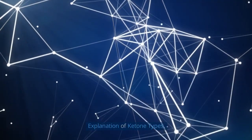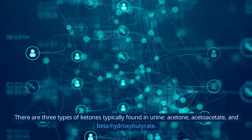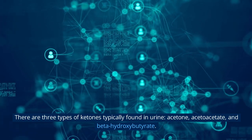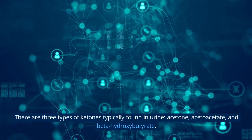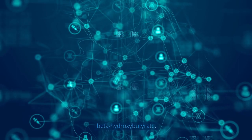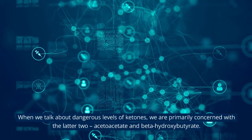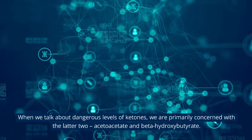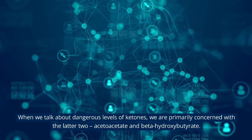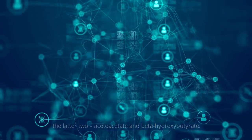There are three types of ketones typically found in urine: acetone, acetoacetate, and beta-hydroxybutyrate. When we talk about dangerous levels of ketones, we are primarily concerned with the latter two: acetoacetate and beta-hydroxybutyrate.